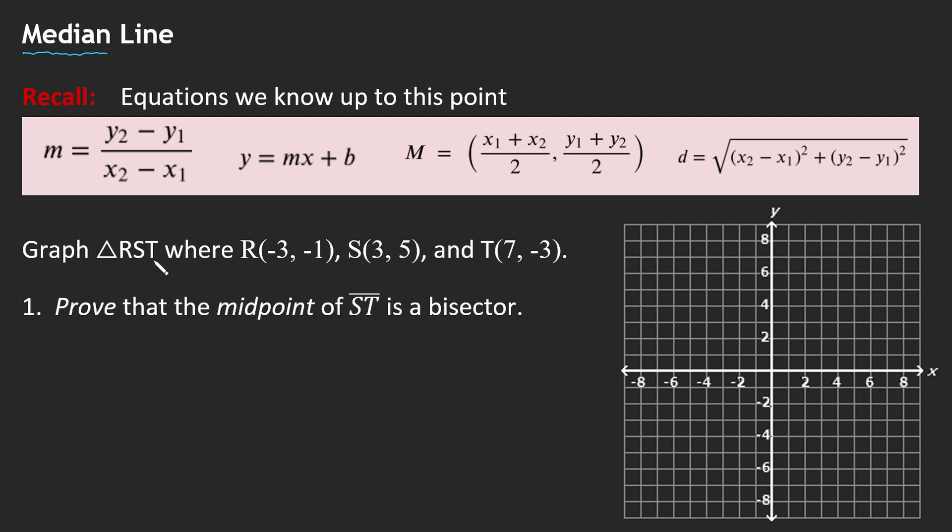So we've been asked to graph triangle RST. Let's graph that. So negative 3, negative 1 for my R value, 3, 5, and of course you can have your own graph paper out, follow along, try this out on your own. 7, negative 3 for my T. It's always recommended that you try this out, don't just watch.